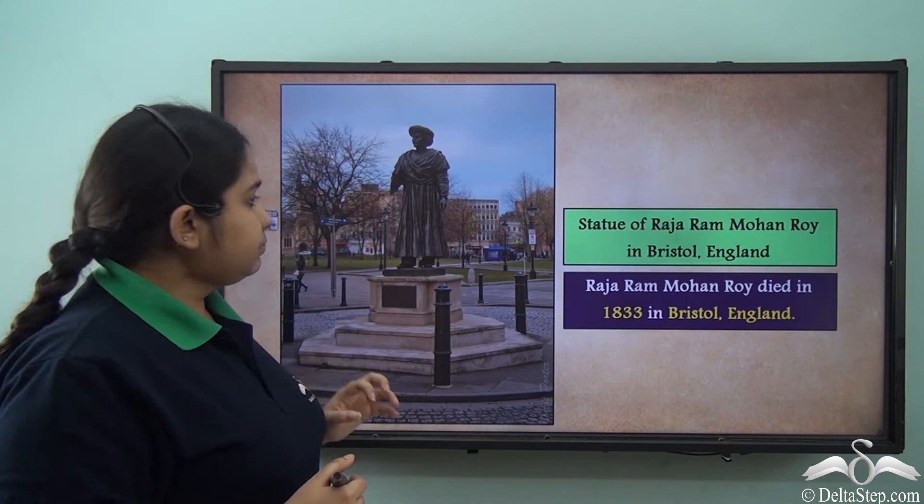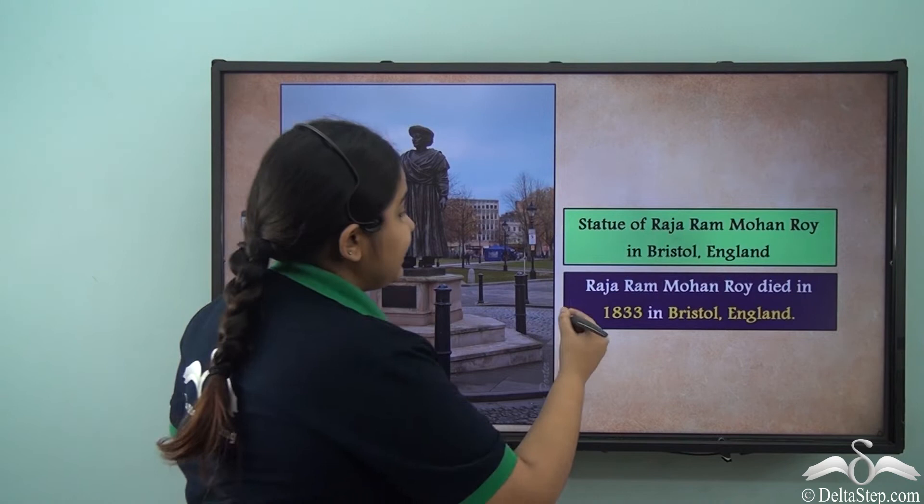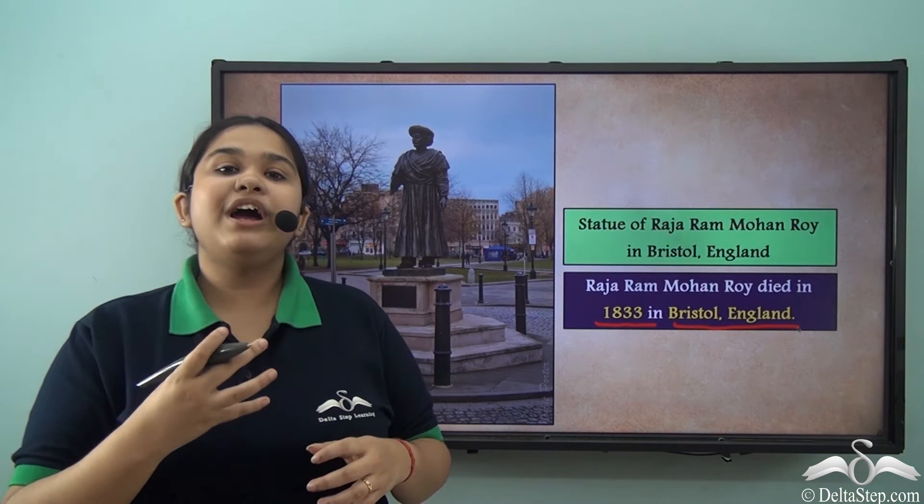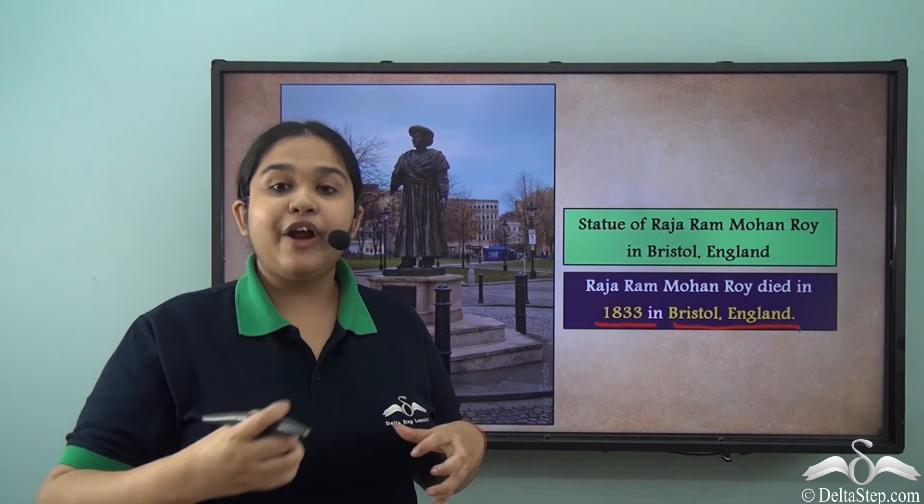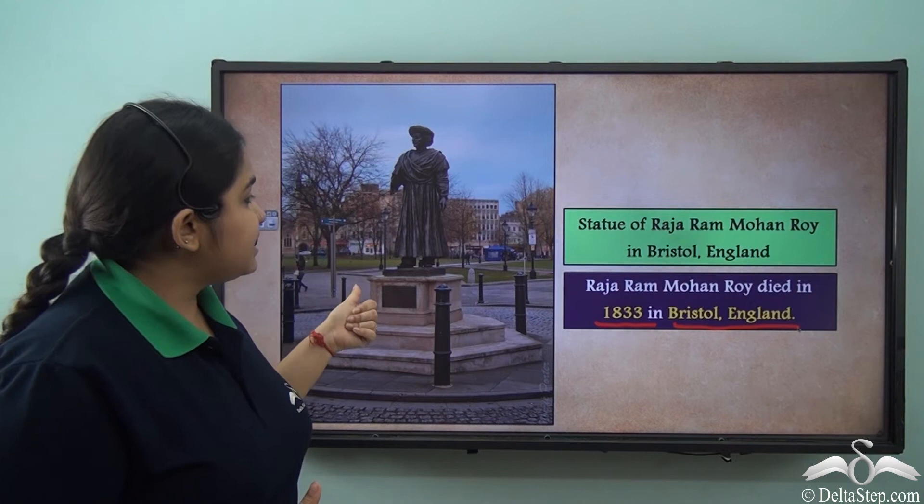Raja Ram Mohan Roy passed away in Bristol in 1833 when he visited England, but he left behind a big legacy — a legacy that was to be carried forward by the reformers who came after him. This is a statue located in Bristol, England, of Raja Ram Mohan Roy.